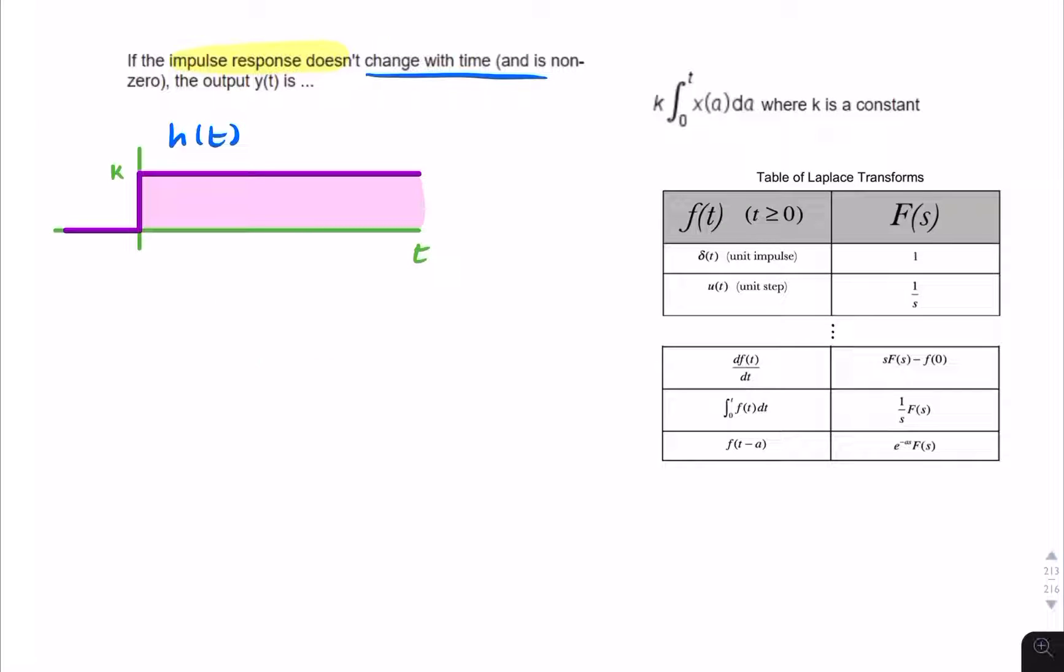When we're told the impulse response doesn't change with time, then it's as if we're saying that H of T is equal to K, but only for positive time. So we multiply that by u of T. So that's our impulse response.